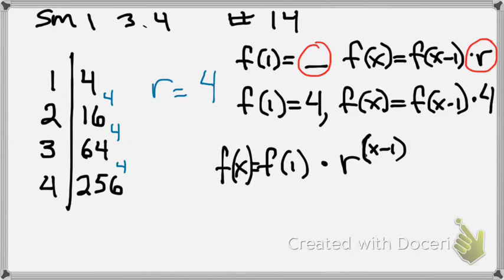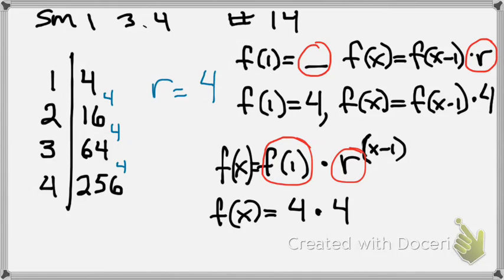So all we have to do now is replace F of 1 and replace R. This is a lot easier than the arithmetic, by the way. So F of X equals, what's my first term? 4 times, what's R? 4 to the X minus 1 power.